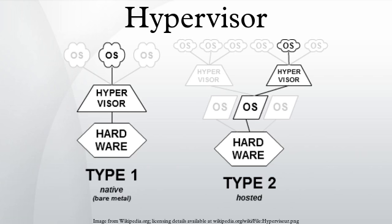Type 2 hypervisors run within a conventional operating system environment. With the hypervisor layer as a distinct second software level, guest operating systems run at the third level above the hardware. VMware Workstation and VirtualBox exemplify Type 2 hypervisors.